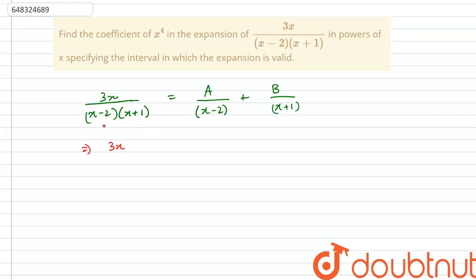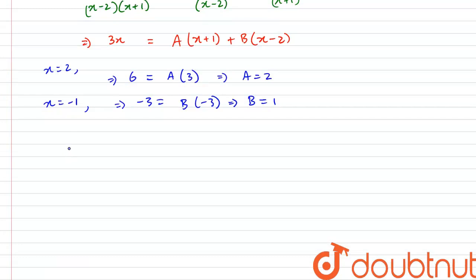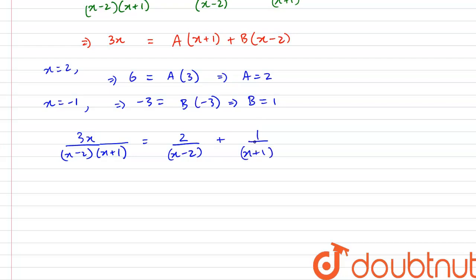Multiplying through by (x minus 2)(x plus 1), we get 3x equals A(x plus 1) plus B(x minus 2). If x equals 2, then the left-hand side gives 6 equals A times 3, so A equals 2. If x equals minus 1, then minus 3 equals B times (minus 1 minus 2), which is minus 3, so B equals 1. Therefore, 3x over (x minus 2)(x plus 1) equals 2 over (x minus 2) plus 1 over (x plus 1).